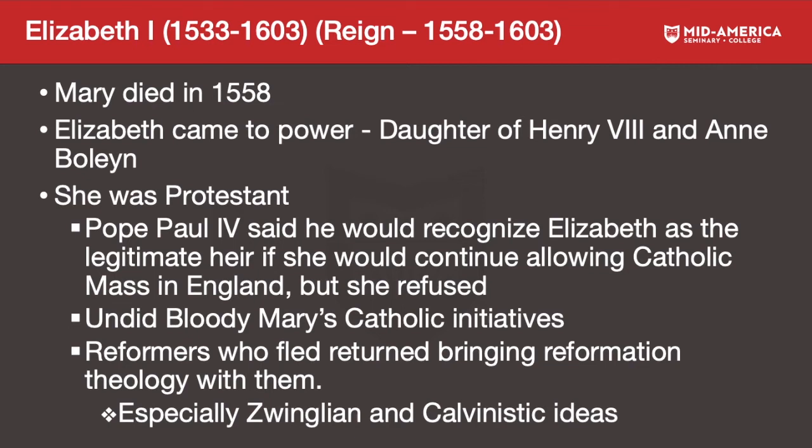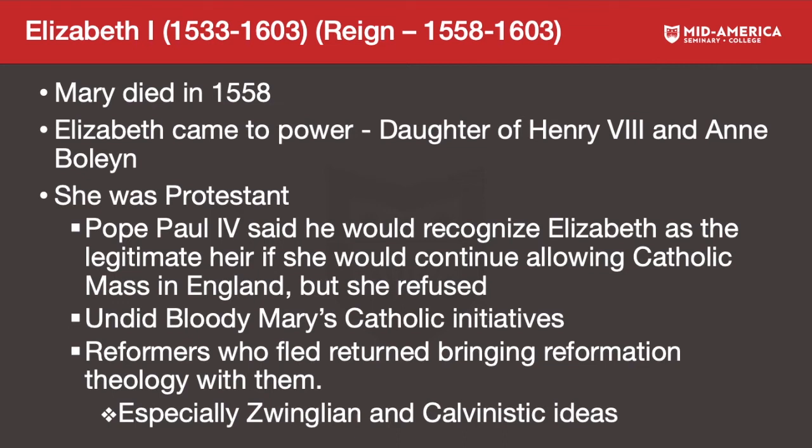Mary Tudor died in 1558 and Elizabeth came to power as the daughter of Henry the Eighth and Anne Boleyn — Henry's second marriage. Elizabeth the First was the complete opposite of her half-sister: she was Protestant and flipped the country back to Protestantism. Pope Paul the Fourth offered to recognize Elizabeth as the legitimate heir if she would allow the Catholic mass to continue in England, but Elizabeth refused.